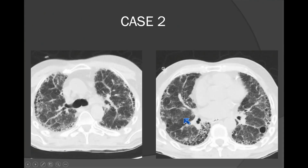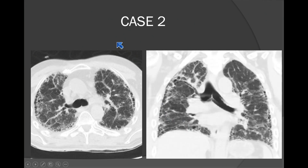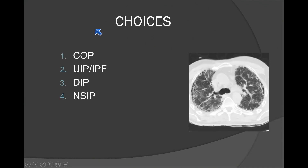Here's another case that often rolls into the ER. It looks like some kind of chronic lung process with cystic change, peripheral and basilar predominant distribution. This is a classic look for UIP — usual interstitial pneumonia.